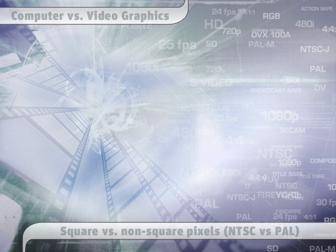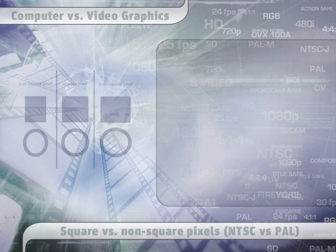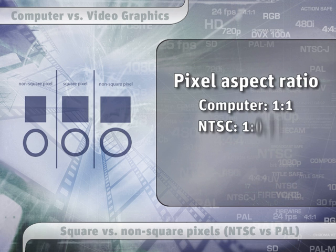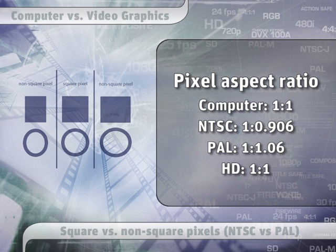Of all the differences between computers and video, the one that drives me the most nuts is the aspect ratio. Computers use square pixels, and video uses rectangular pixels.